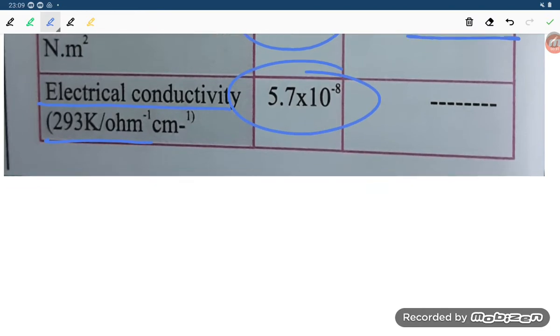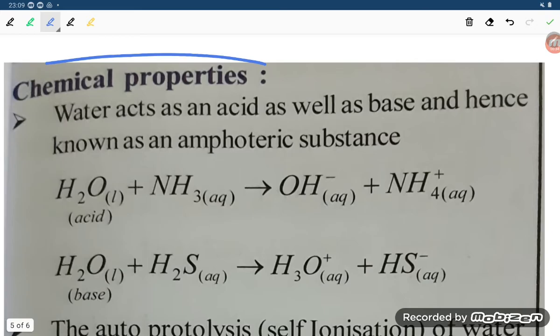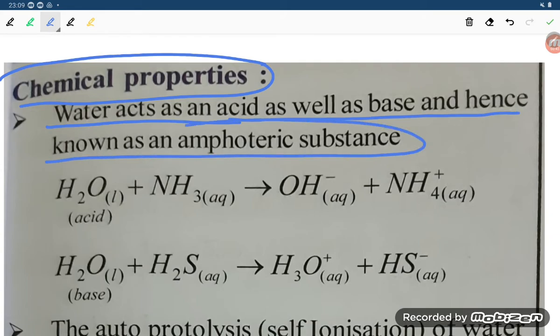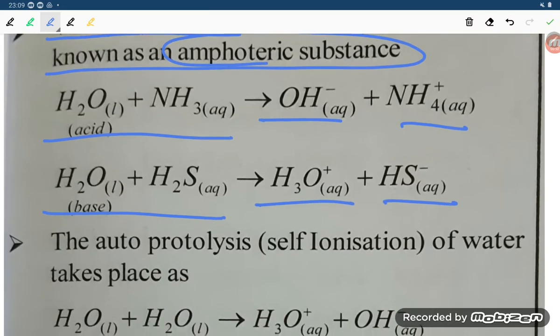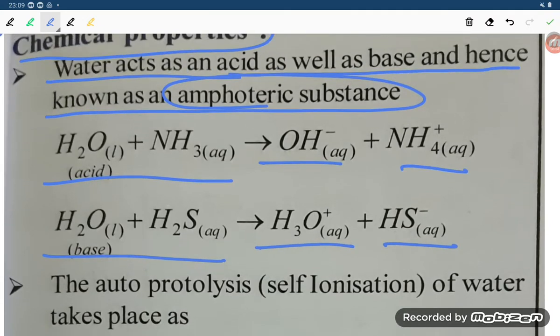Now let us have a look over the chemical properties. Water acts as an acid as well as a base and hence is known as an amphoteric substance. Like water plus NH3 gives OH minus plus NH4 plus. Water plus H2S gives H3O plus plus HS minus. This is reacting with acid and base, that is why it is known as amphoteric substance.